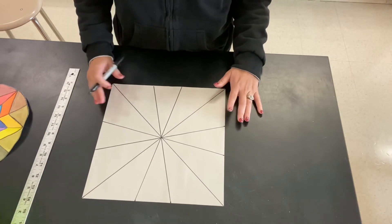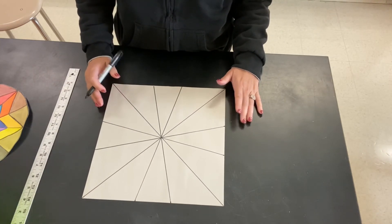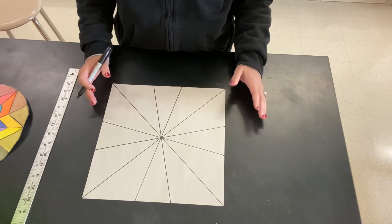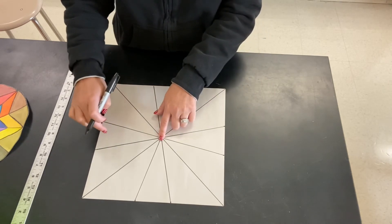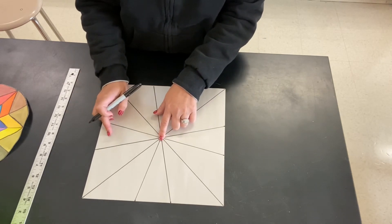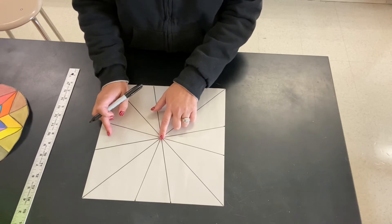The next thing we want to do is put in our circle. So if you have a compass, that's going to be the easiest thing for you to use. You would put your center here and you want to come out to about a 10-inch diameter circle.